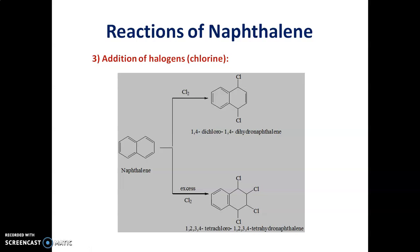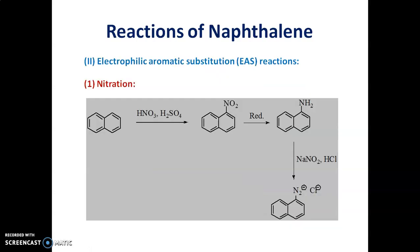Let us discuss the electrophilic aromatic substitution reactions of naphthalene. The first reaction is nitration. Naphthalene undergoes nitration with concentrated H2SO4 and nitric acid to produce 1-nitronaphthalene. This 1-nitronaphthalene on further reduction yields 1-amino-naphthalene. This 1-amino-naphthalene reacts with a diazotizing reagent that is sodium nitrite and HCl